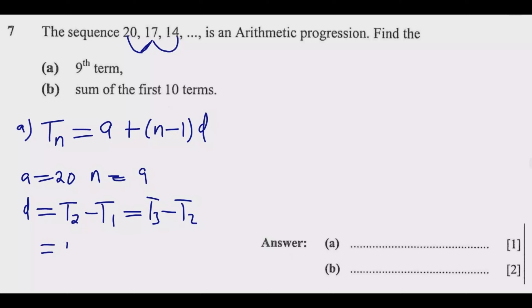So it will be 17 minus 20, then 14 minus 17. If you say 17 minus 20, this should give me negative 3. Then this should also be true if I say 14, the third term, minus 17, I'll get negative 3 because it's a constant difference.